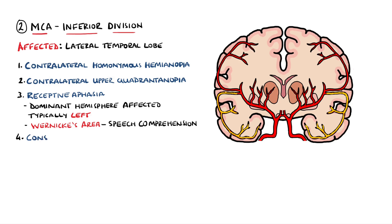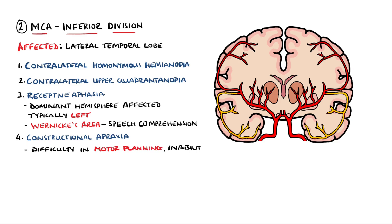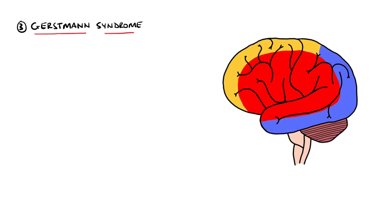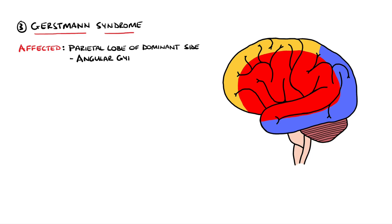If the non-dominant hemisphere is affected, then constructional apraxia may be seen, which is a difficulty with motor planning resulting in the inability to execute tasks despite having understood the instructions and having the physical capability to perform them. Gerstmann's syndrome is next, which is seen when the parietal lobe of the dominant side is affected, specifically around the angular gyrus.